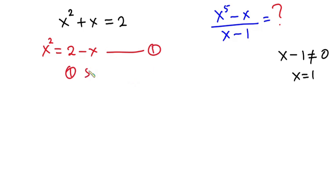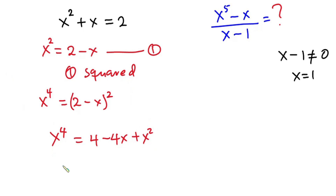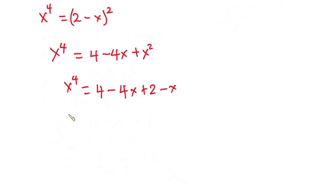From equation 1, I'm going to square each side of the equation. So we have x to the fourth power is equal to 2 minus x, all squared. Expanding the right-hand side: 2 squared is 4, minus 4x, plus x squared. Now we know x squared from equation 1, so substituting gives x to the fourth power equals 4 minus 4x plus 2 minus x, which simplifies to x to the fourth power equals 6 minus 5x.